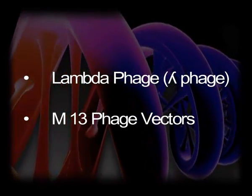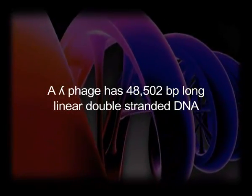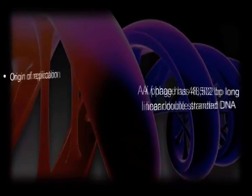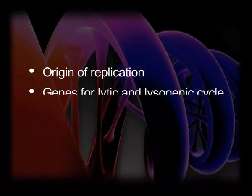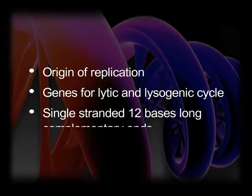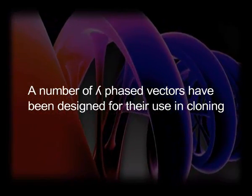Two widely used phages in recombinant DNA technology are lambda phage and M13 phage. Lambda phage has a 48,500 base pair long linear double-stranded DNA. It contains an origin of replication, genes for lytic and lysogenic cycle, and single-stranded 12-base long complementary ends called cohesive ends or cos sites. A large central segment — more than 15 kilobases — of the lambda genome concerned with the lysogenic cycle has been removed, making the lambda phage non-lysogenic. Since a genome size of about 49 kilobases is required for packaging of lambda phage, as much as 20 kilobases of foreign DNA can be cloned in the newly designed lambda vector.